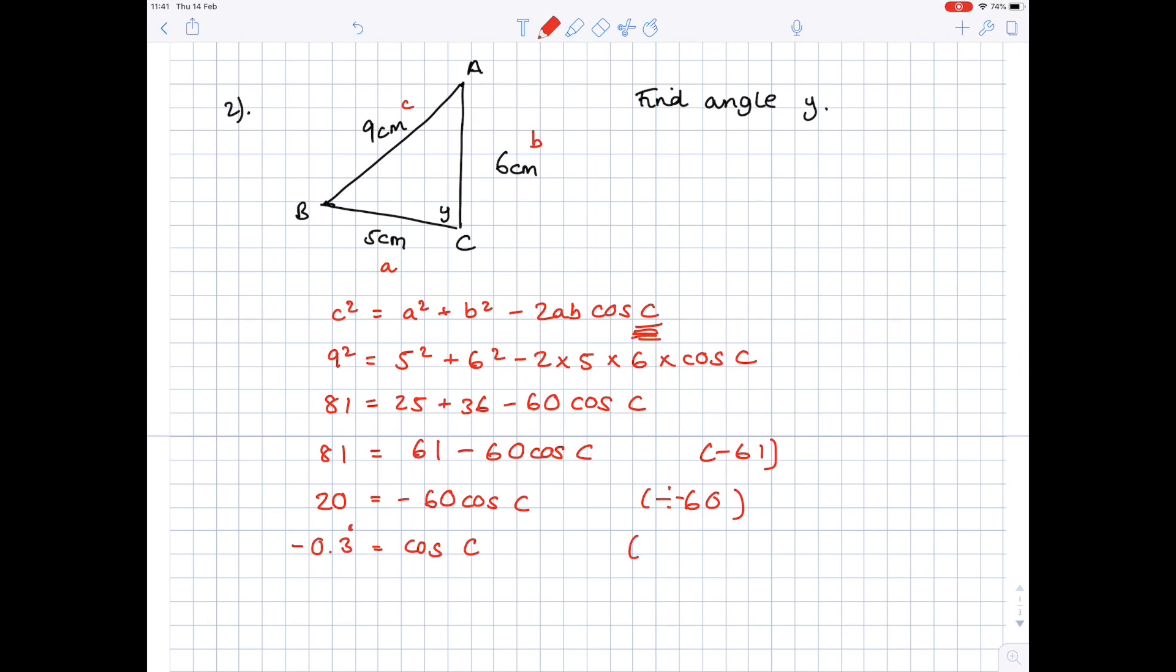To find angle C, you want to do inverse cos of that number, so try and keep it in your calculator. You get a value which is C equals 109 degrees to three significant figures, and that's effectively angle Y.